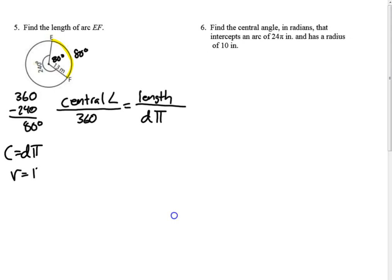In our circle, we have the radius of 13. That means the diameter is 26. That means the circumference is 26 pi. So we would do 80 over 360 equals the measure of arc EF. We could do it that way, or we could just call it x, x over 26 pi.